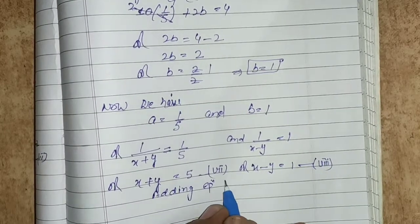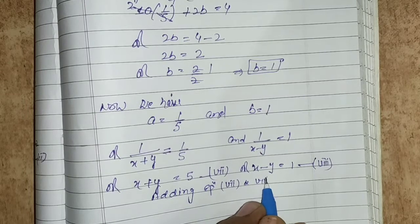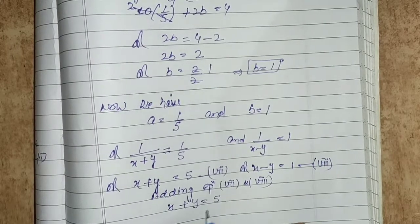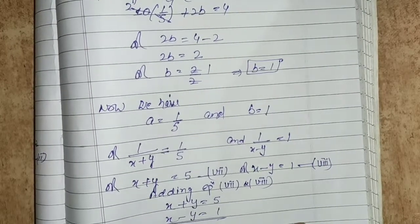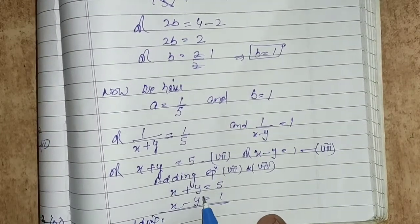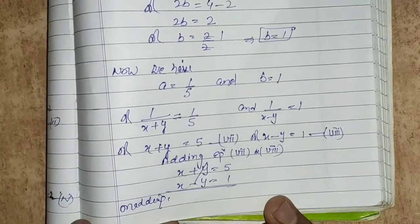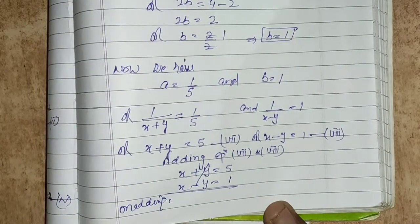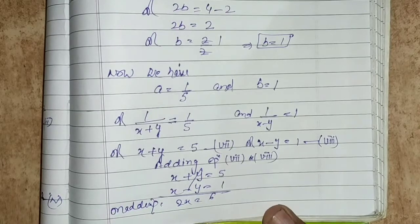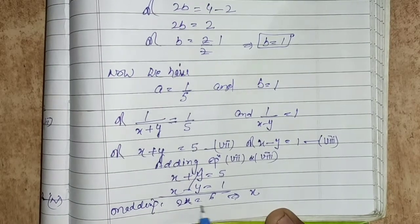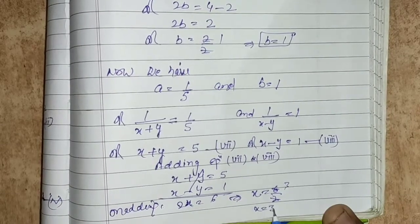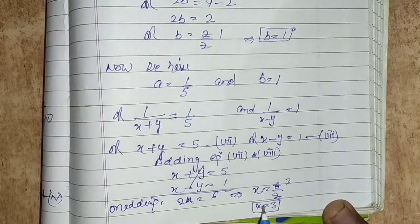Adding equations 7 and 8: x plus y equals to 5 and x minus y equals to 1. The y terms cancel. We get 2x equals to 6, so x equals to 6 upon 2, which is 3.